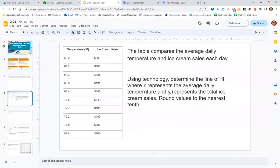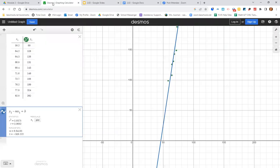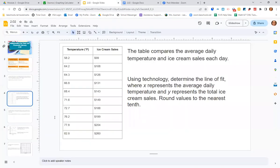So when we go back to the question, it just wants us to determine the line of fit. So we would look at our A, B, C, D. We would look at our line of fit here and just make sure that we have a similar slope and a similar y-intercept when picking our answer.